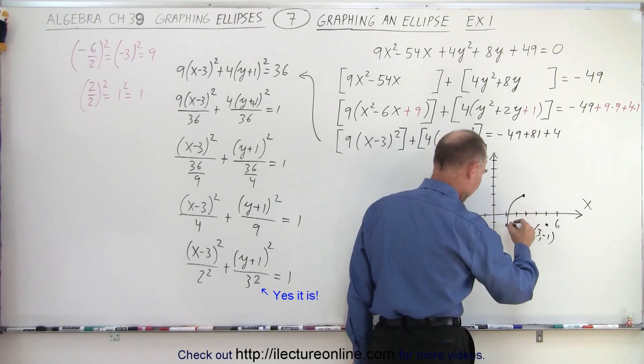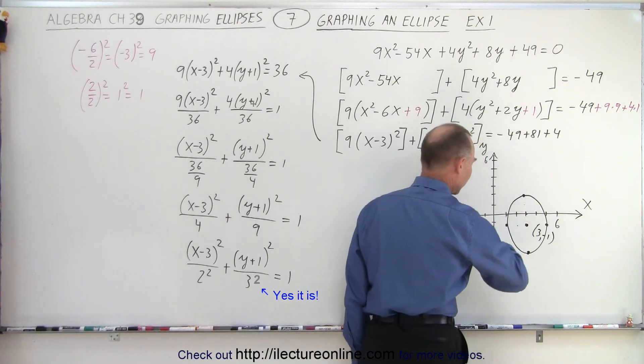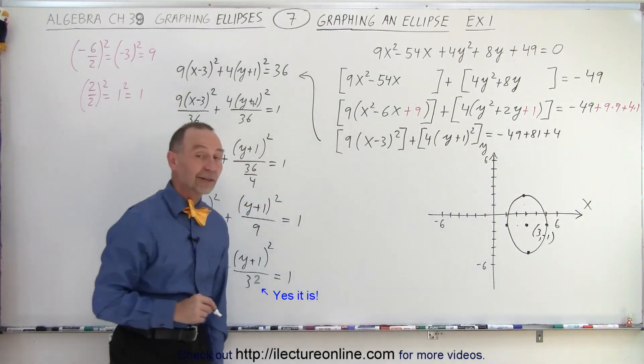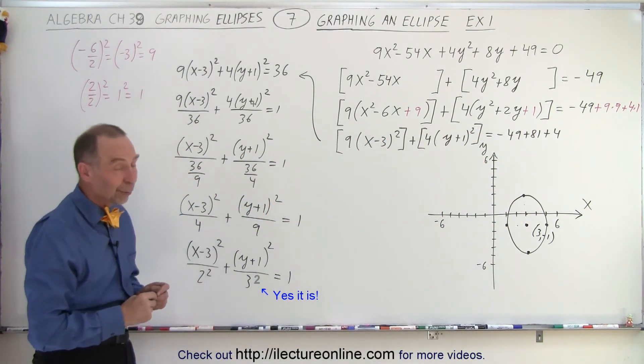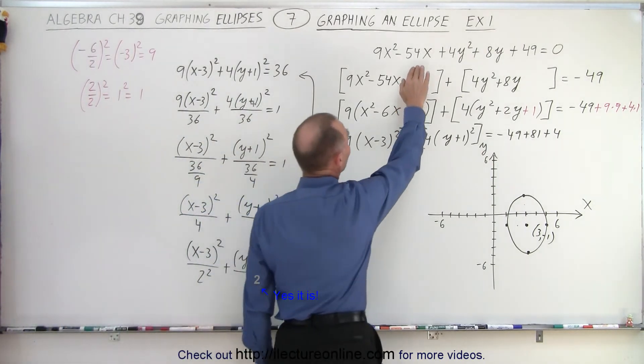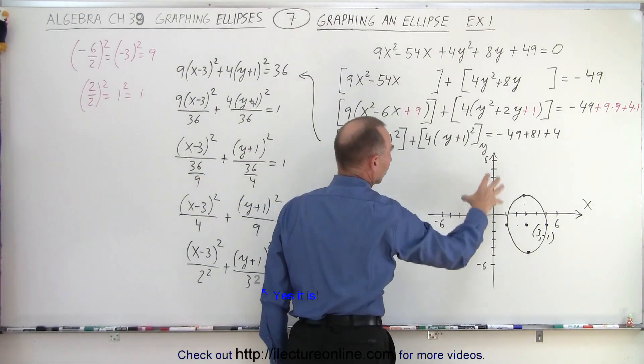We have a nice ellipse that looks like this. And there you go. That's how you graph that original equation.